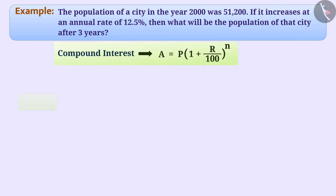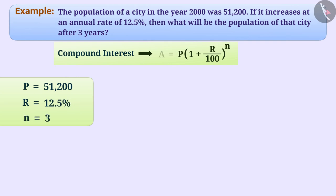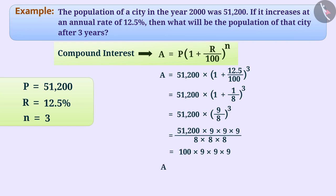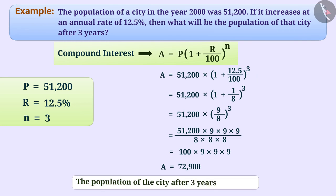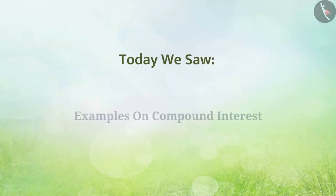In such a situation, we can find the population after three years with the help of the compound interest formula. Here P = 51,200, R = 12.5%, and n = 3. Using A = P × (1 + R/100)^n and solving the expression, we get A = 72,900. The population of the city after three years will be 72,900.